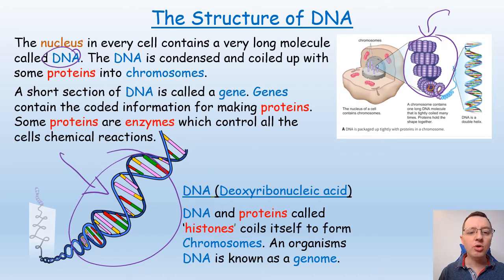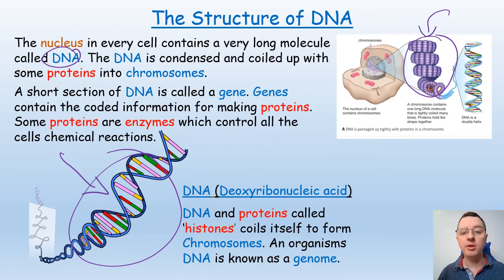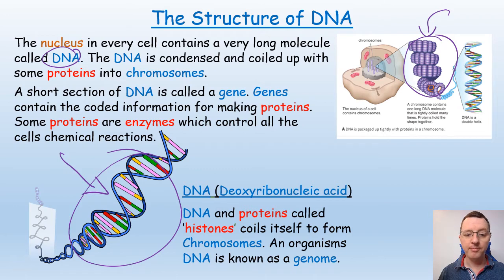A very short section of DNA is called a gene, and genes contain the coded information for making a protein. Some proteins are enzymes which control all the chemical reactions that happen in a cell, so in this way the DNA will control the functions of the cell. DNA stands for deoxyribonucleic acid, and the DNA and the proteins called histones will coil together to form the chromosomes.